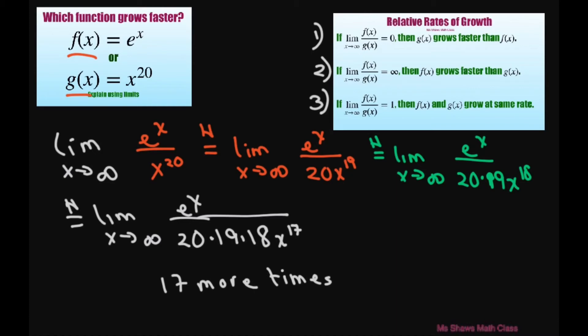Using L'Hopital's rule 17 more times, you get the limit as x approaches infinity of e to the power of x, and then basically you're just going to get 20 factorial in the denominator. The x will go away because you'll have x to the power of 0 at some point.